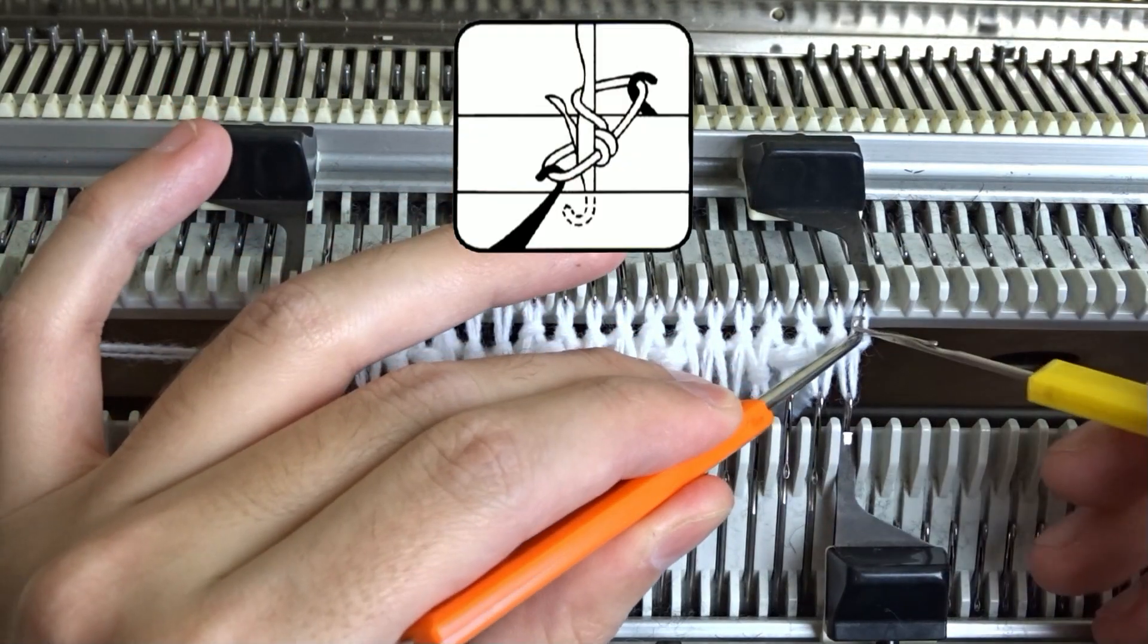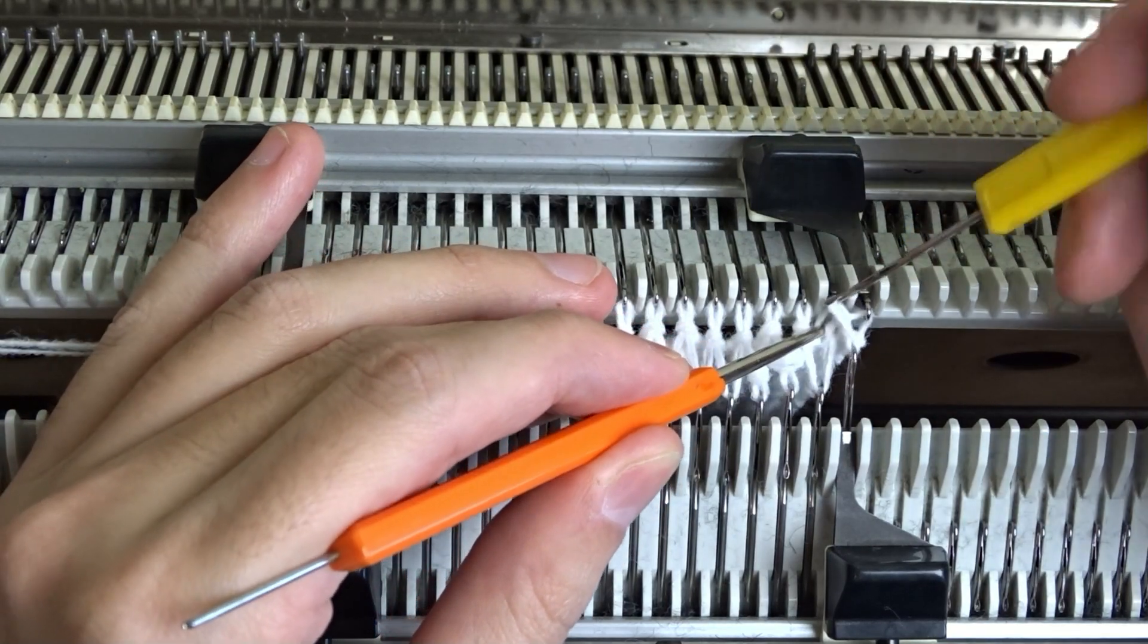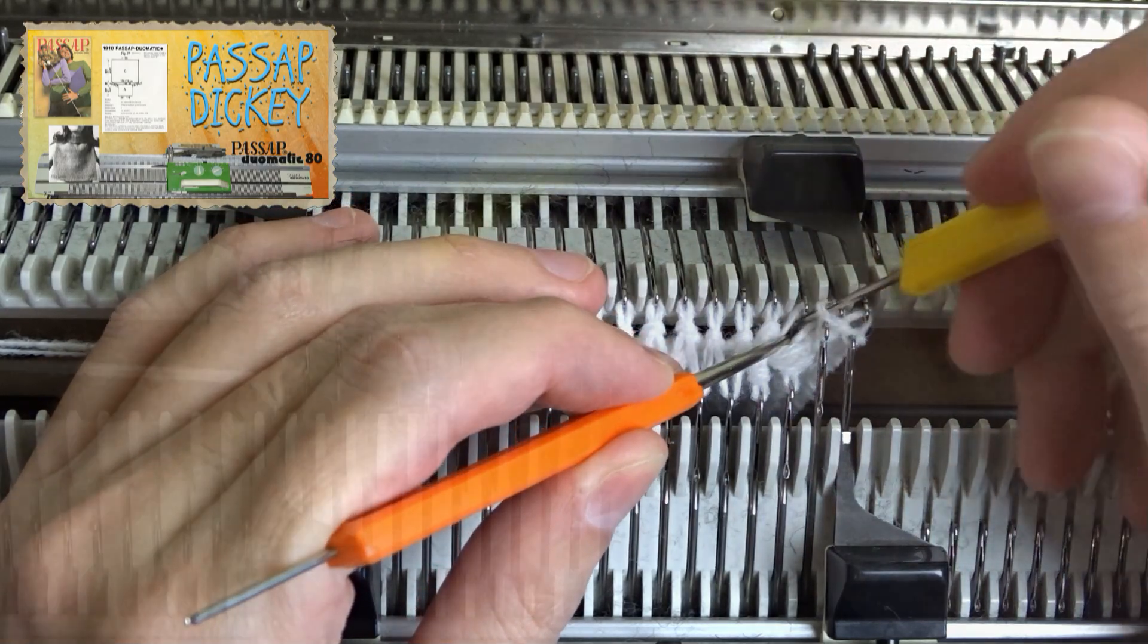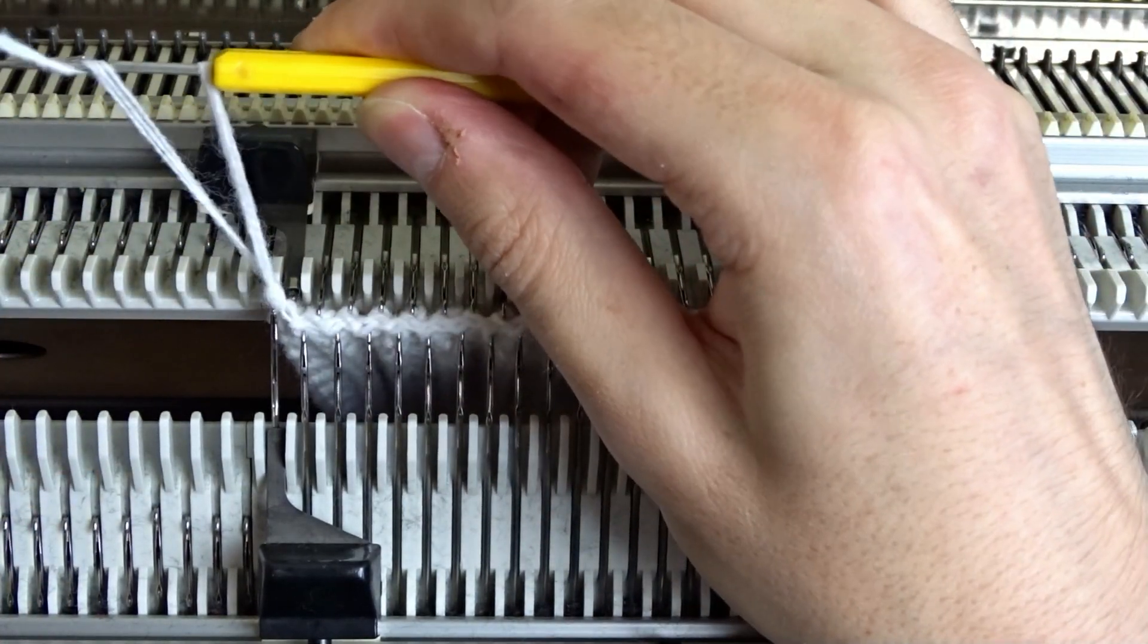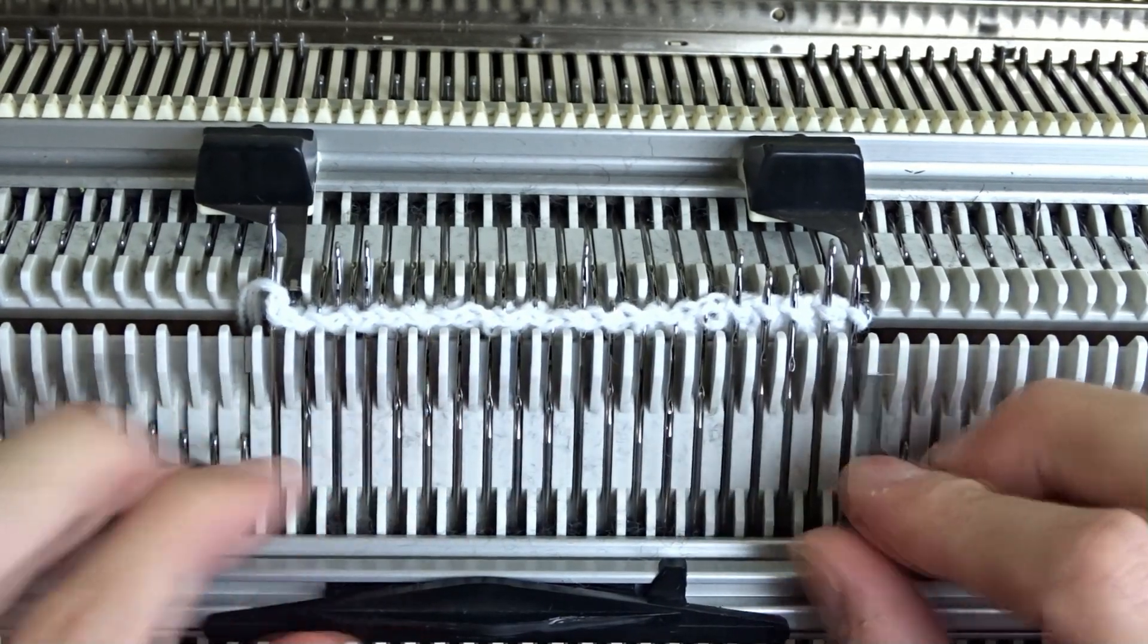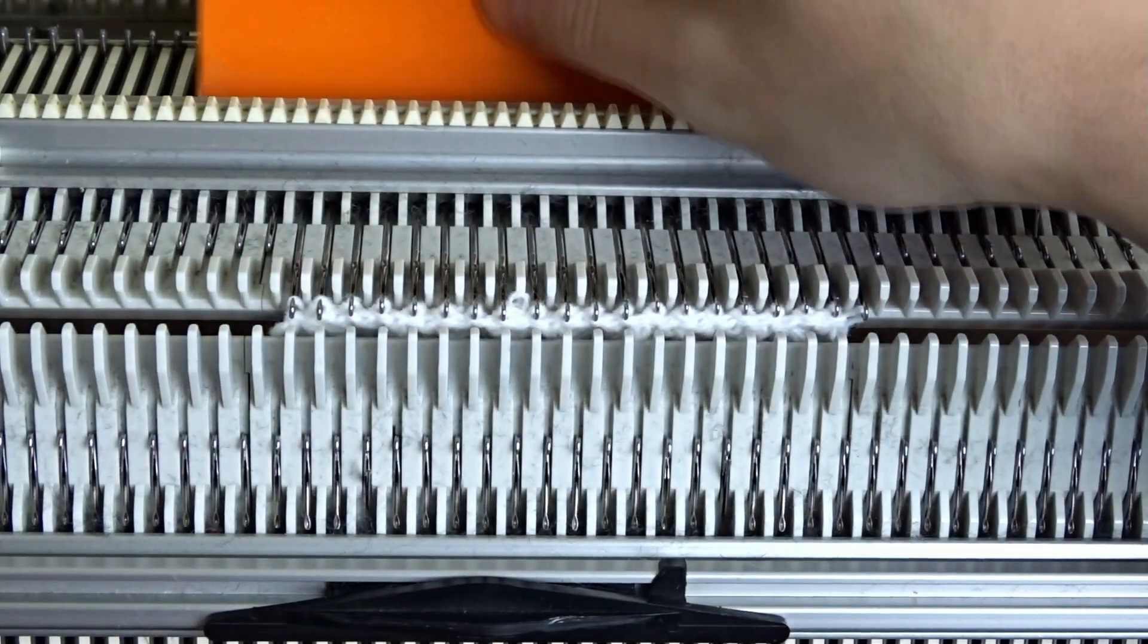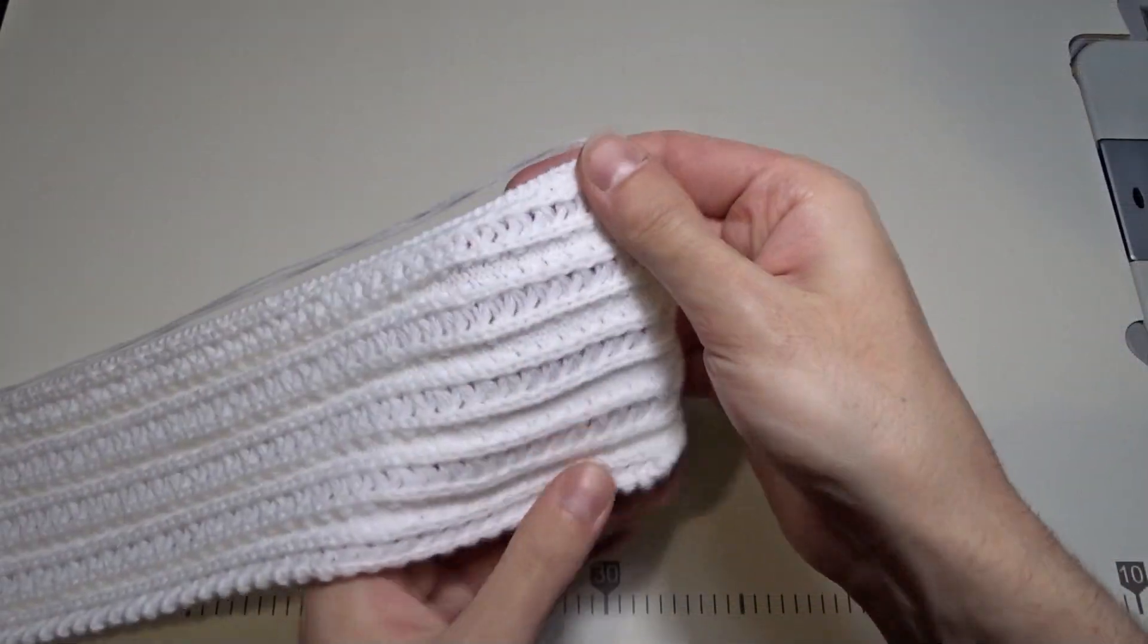Use the yellow tool and make a zigzag latch cast off. Both ends of the strip will look the same. Raise the front bed, move the edge springs and remove the knitted piece from the machine. It should look like this.